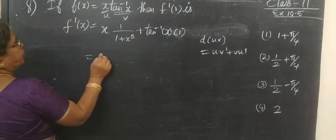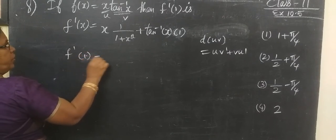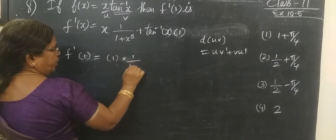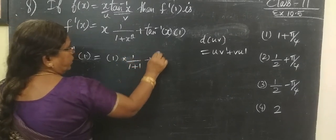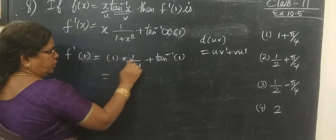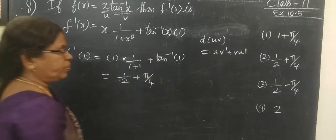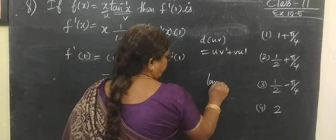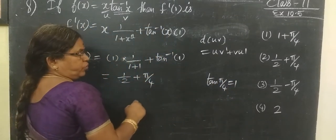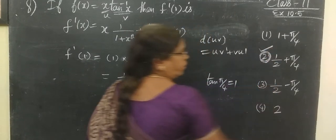Now f'(1). Therefore f'(1): substitute x equals 1 — that gives 1 times 1 divided by (1 plus 1²) equals 1/2, plus tan inverse of 1. We know tan(π/4) equals 1, so tan inverse of 1 equals π/4. Therefore f'(1) equals 1/2 plus π/4. That is the correct answer.